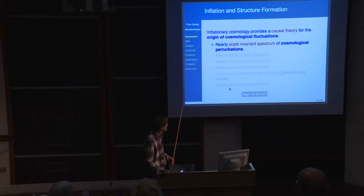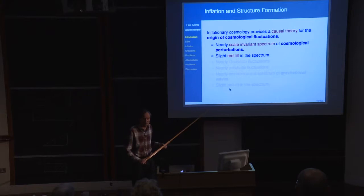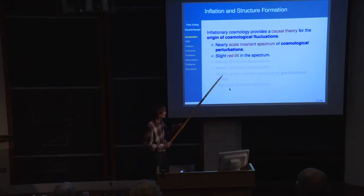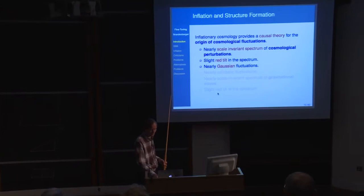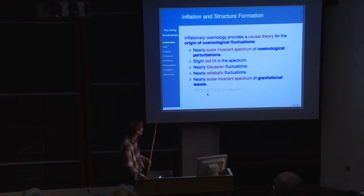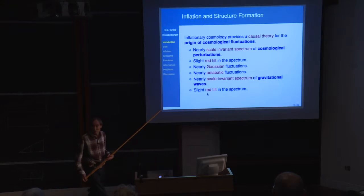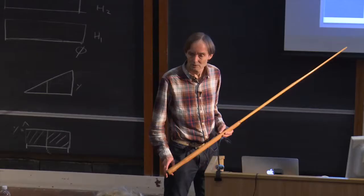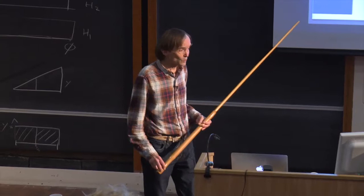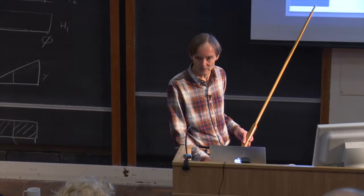This red curve is predicted by inflation, except for the overall amplitude. Inflation predicted a scale-invariant spectrum of cosmological perturbations with a slight red tilt — slightly more power on long wavelengths than short wavelengths. It predicted that the fluctuations are nearly Gaussian and nearly adiabatic. It makes further predictions not yet confirmed: the near-scale invariance of gravitational waves and a slight red tilt in the gravitational wave spectrum. These predictions were made shortly after 1980, and the high-quality data came in the 2000s. So inflation was really predictive, and from a historical point of view, no one can argue that it is not a very successful predictive theory.